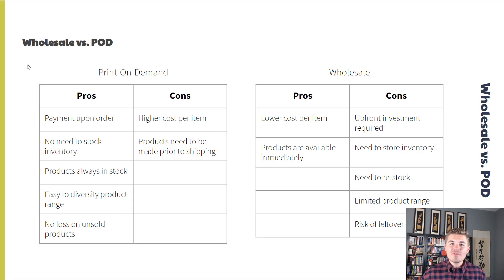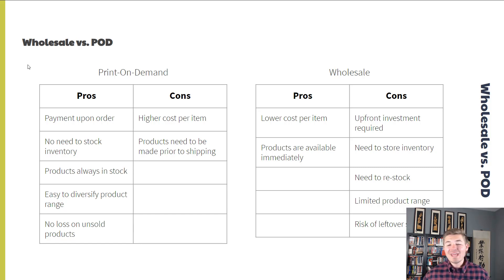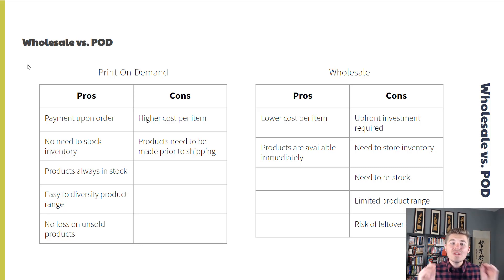It saves time and allows for instant setup rather than jumping through different channels worrying about manufacturers or wholesalers. I even have a slide here: wholesale versus print on demand. The difference is that wholesale means going to a wholesaler, getting discounts, and ordering in higher quantities. With print on demand, the pros are pretty awesome: number one, it's payment upon order — you only pay Printful when an order is made on your website. Number two, you don't have to stock inventory.